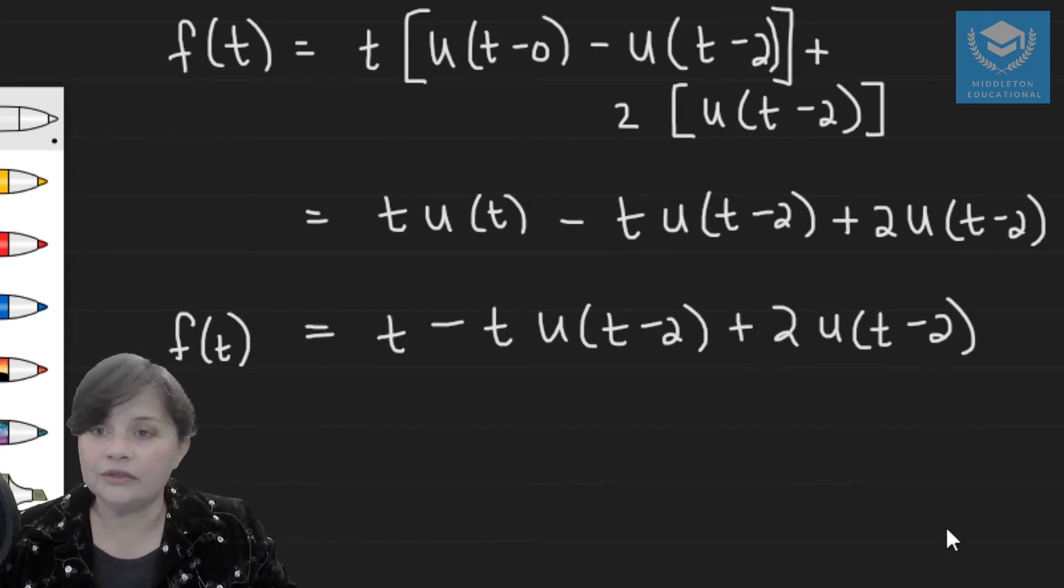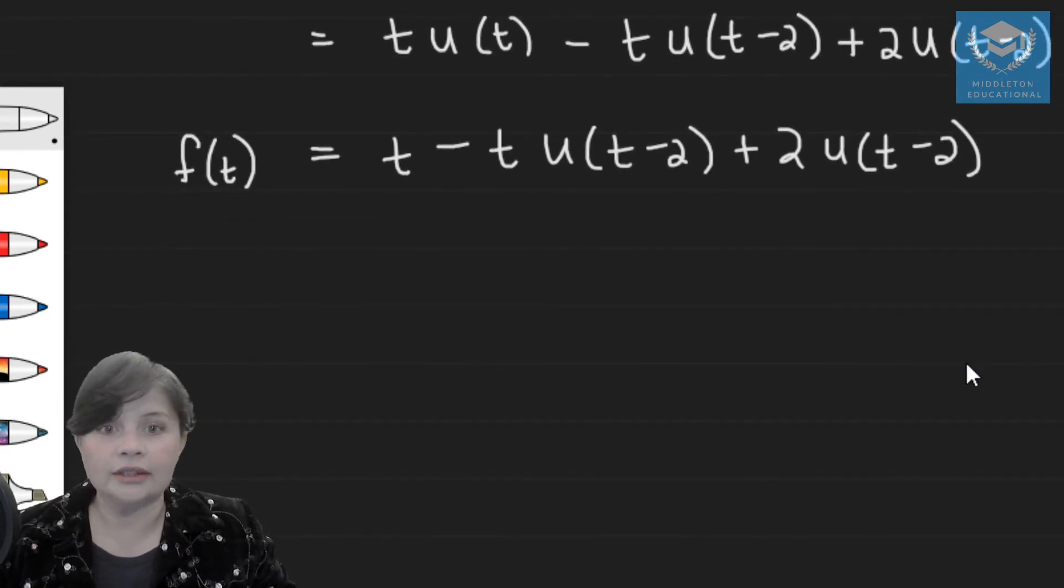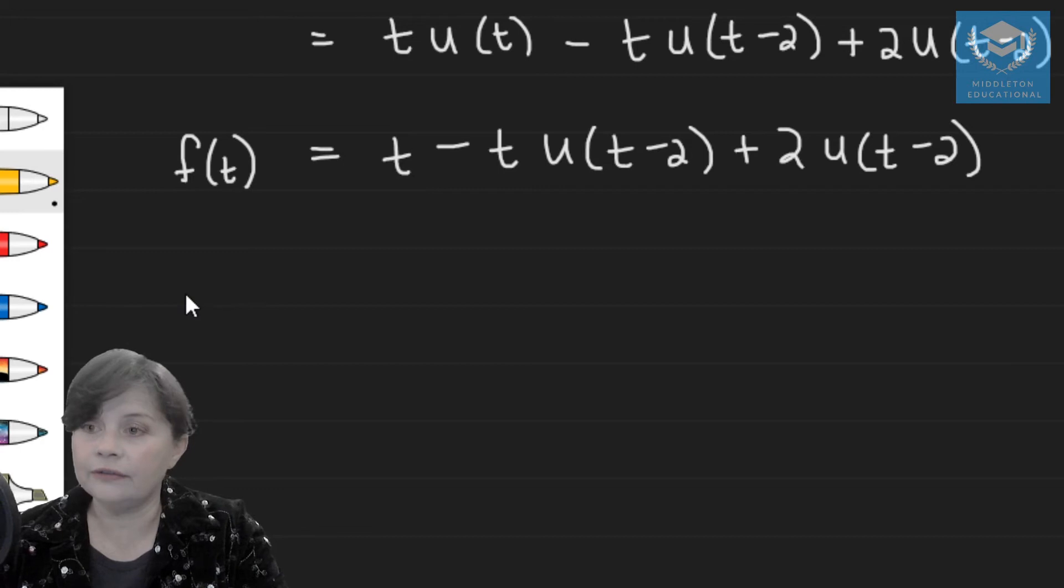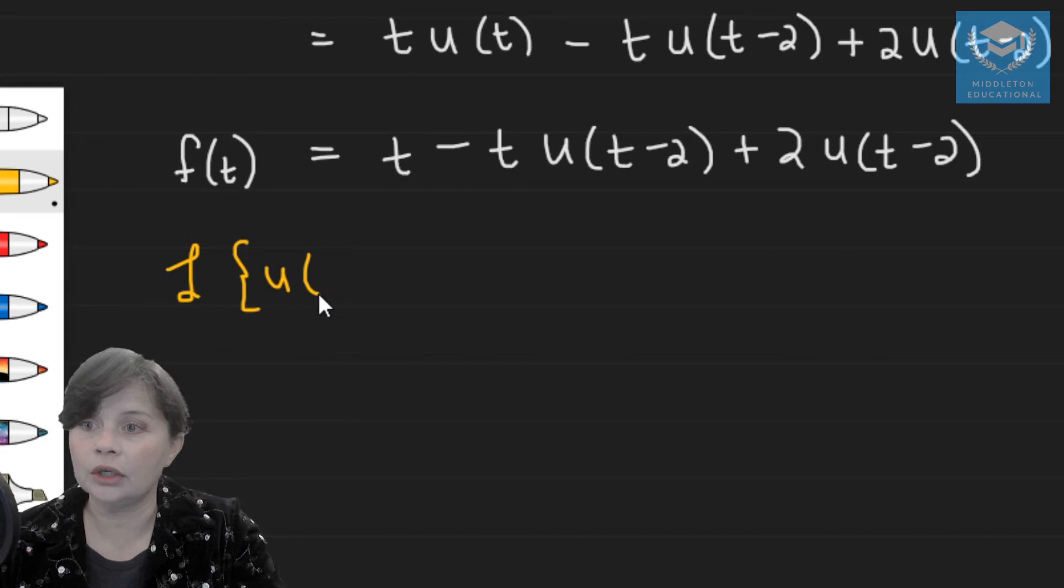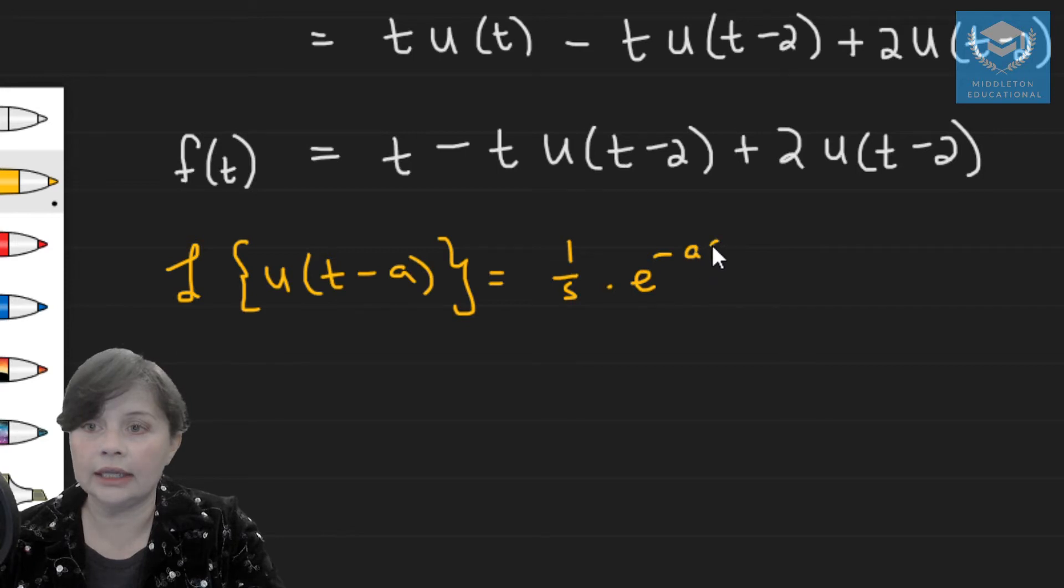Now from the previous videos, let's just recall what our formulas are. So the first one we derived was the transform of u(t-a), and that was equal to 1 over s times e to the minus as.